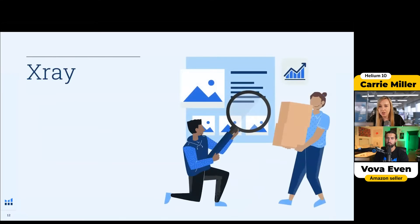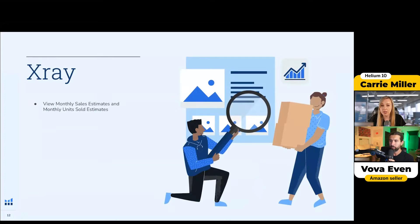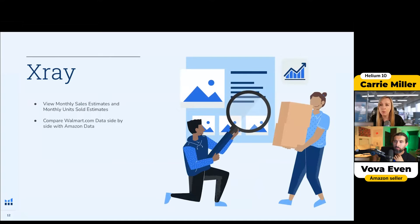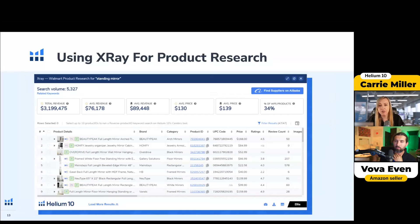X-ray was really helpful for me, especially to see what the competition was and what the potential is. You can view monthly sales estimates and monthly units sold. You can also compare the data side-by-side to Amazon data if we're able to connect it with an ASIN on Amazon — we'll pull the data into X-ray so you can see it side-by-side. You can see different areas to beat your competition. It'll show the total revenue and then the average revenue for the seller and the average revenue on Amazon.